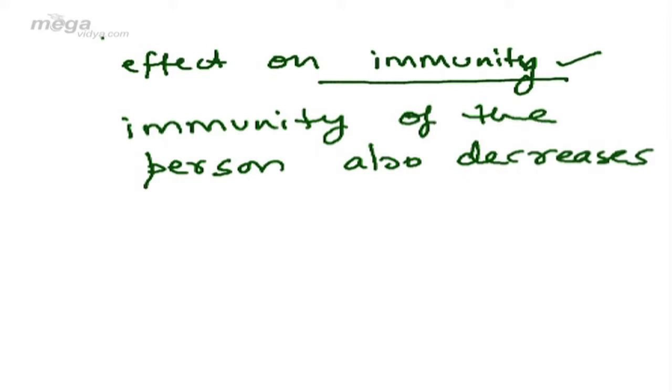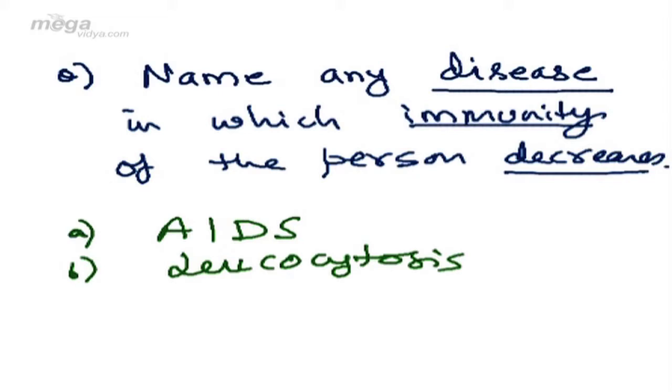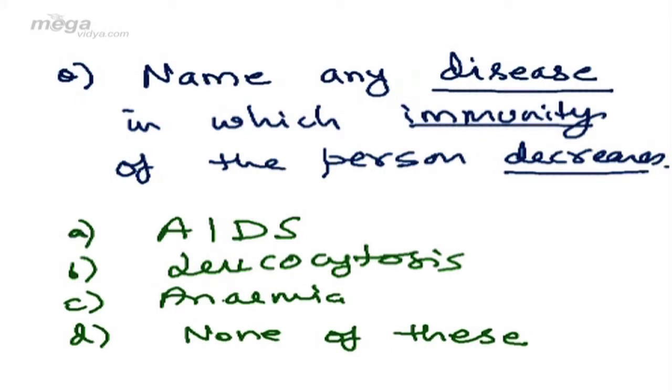Can you tell me any disease in which the number of WBCs decreases? Name any disease in which immunity decreases. I give you four options: AIDS, leukocytosis, anemia, and none of these. The correct answer will be AIDS.